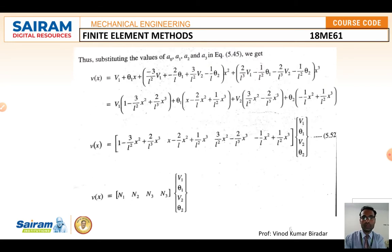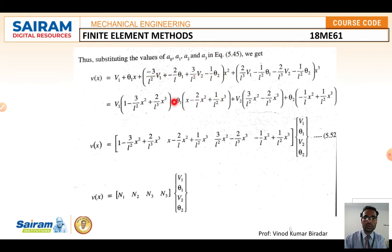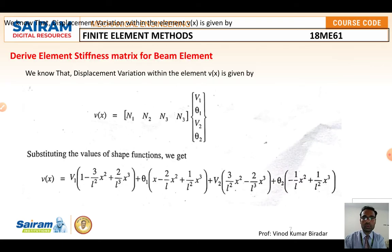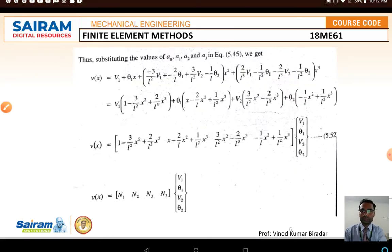Substituting a₀, a₁, a₂, and a₃ back into the first equation v(x) = a₀ + a₁x + a₂x² + a₃x³ and simplifying, we get: v(x) = (1 - 3x²/L² + 2x³/L³)v₁ + (x - 2x²/L + x³/L²)theta₁ + (3x²/L² - 2x³/L³)v₂ + (-x²/L + x³/L²)theta₂. The coefficients of v₁, theta₁, v₂, theta₂ are the shape functions.